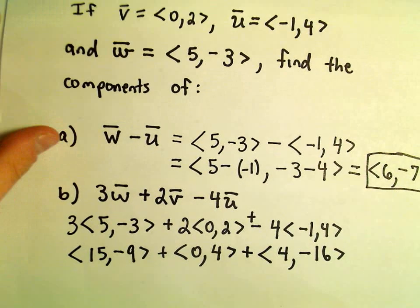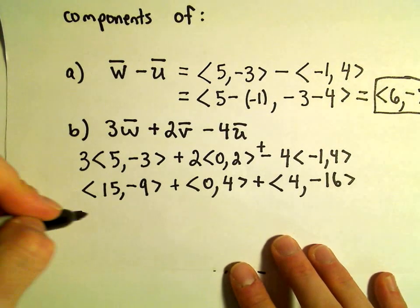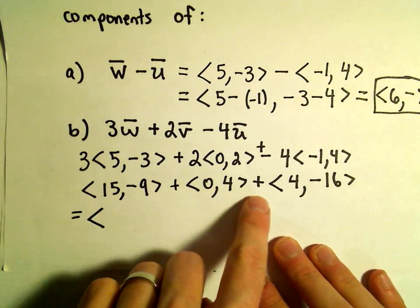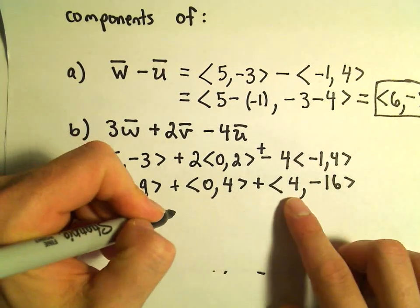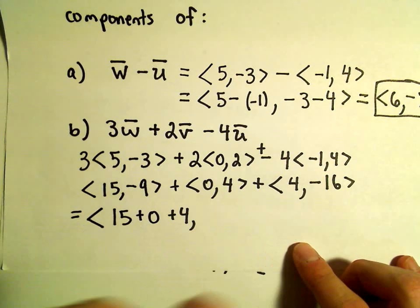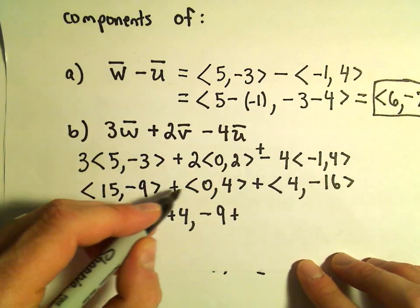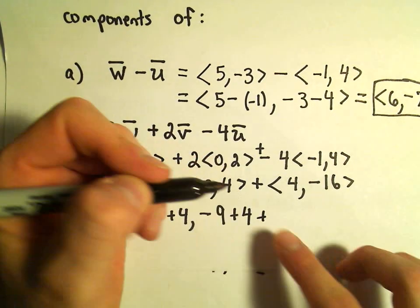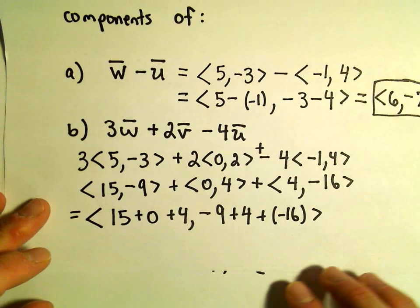And now it's addition. You could do these pair-wise, two at a time if you want to. But the basic idea is if you have a bunch of addition, you just add all of the respective first components. So 15 plus 0 plus 4. And then our next component would just be negative 9 plus 4 plus negative 16.